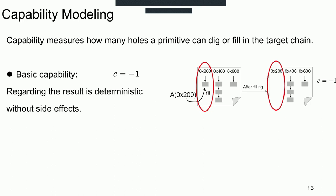Next, we introduce the capability modeling part. The capability of primitives measures how many holes the primitives can create or fill in the target chain. We model basic capability and extended capability for each primitive. Our basic capability regards the effect of the heap operation as deterministic. For example, allocating hex 200 bytes chunk is supposed to decrease one hole in the target chain, and the basic capability is minus one.